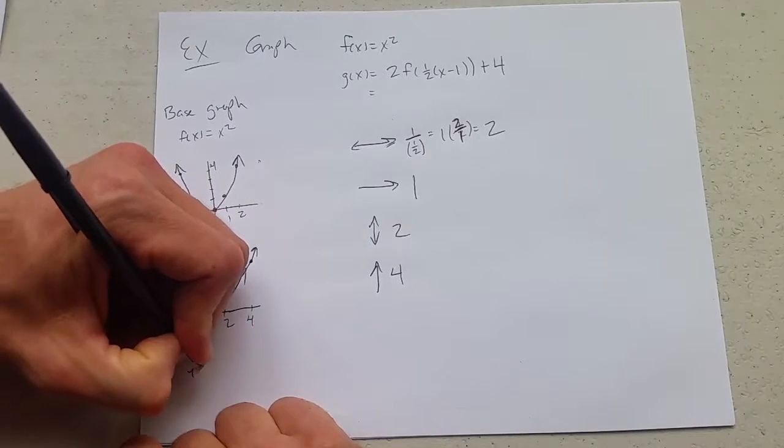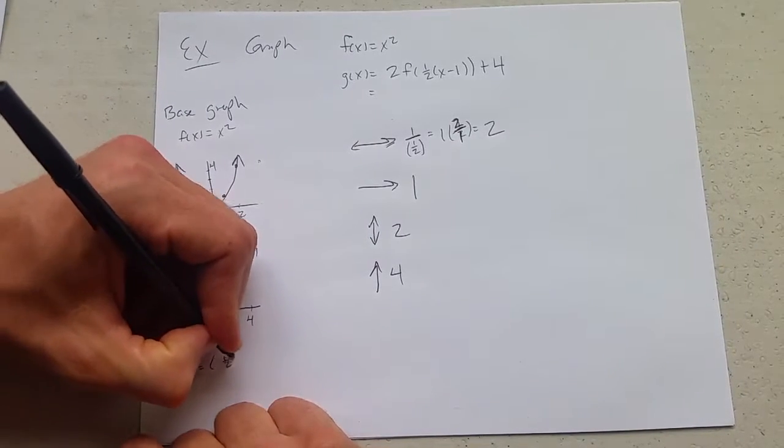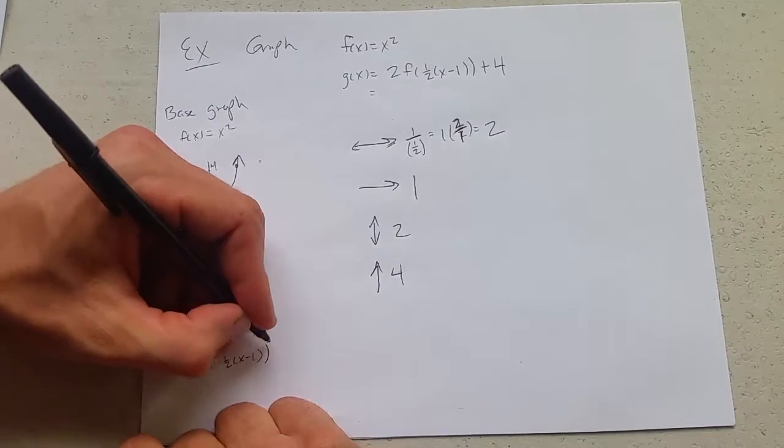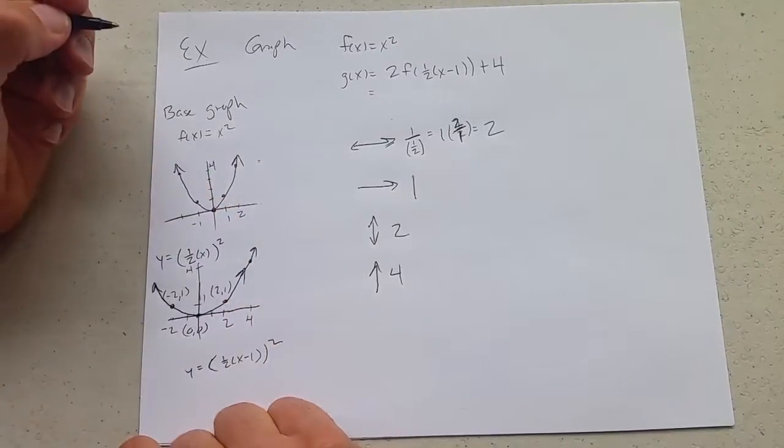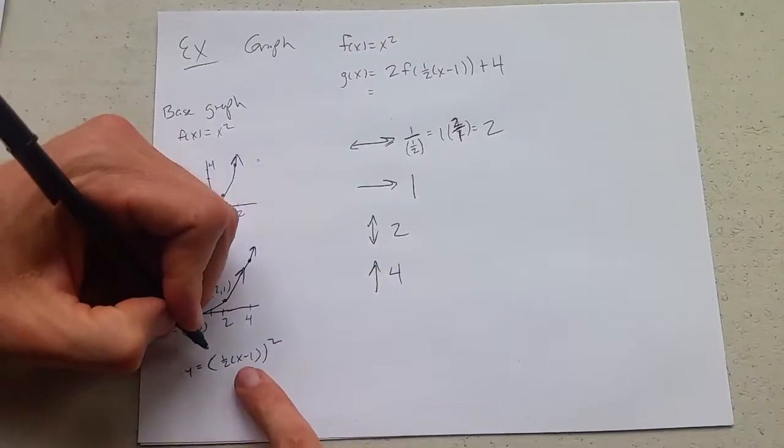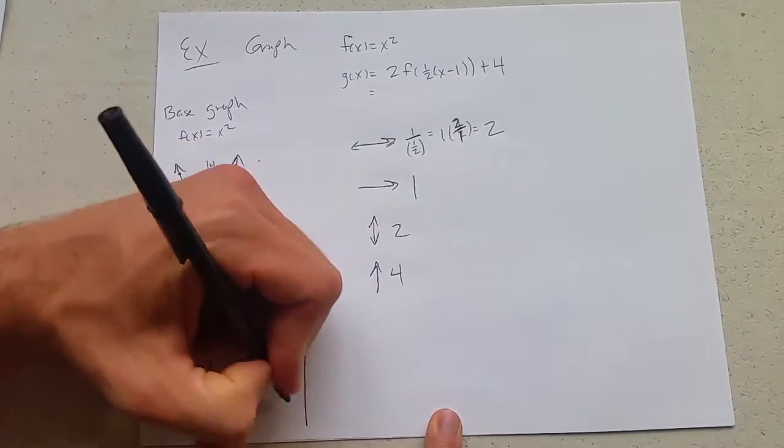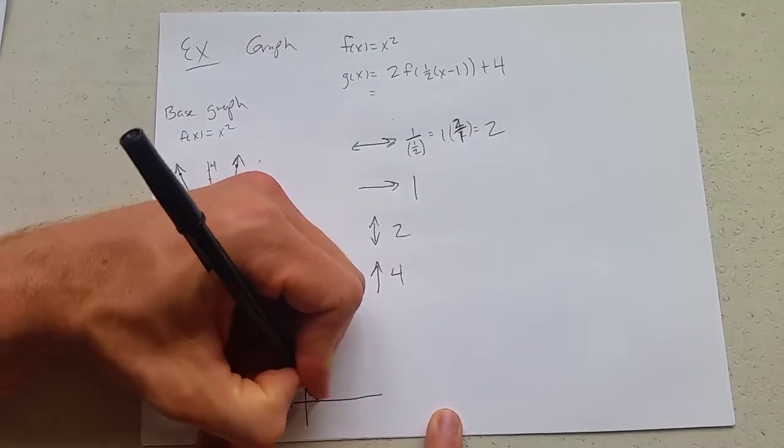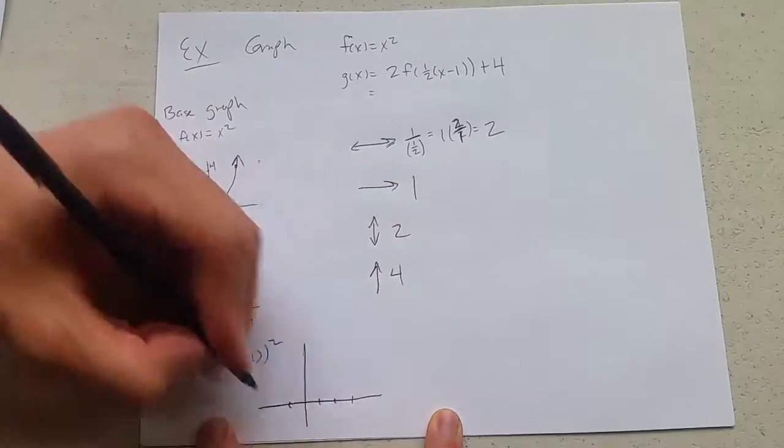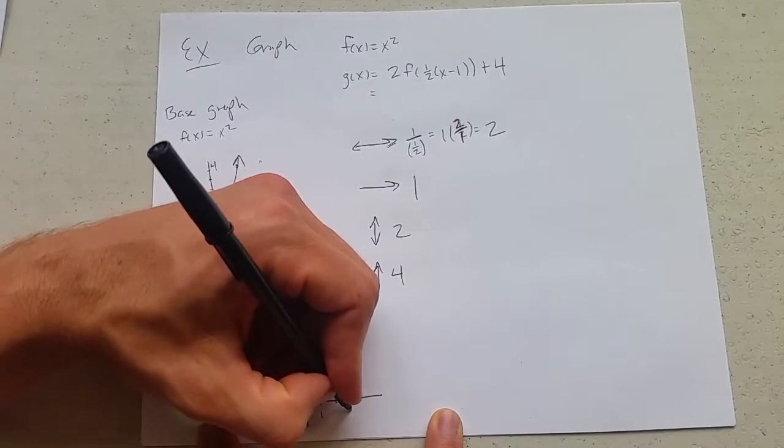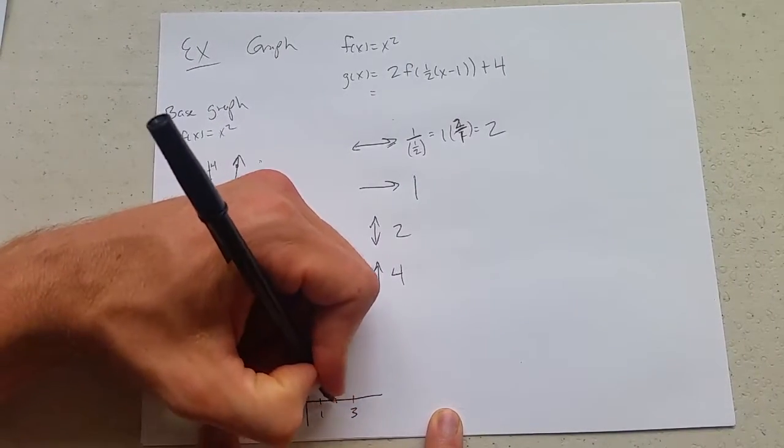Next up we're going to do the shift. So y = 1/2(x - 1)². This is a shift to the right one, so we're going to take our x coordinates and we're going to add one to each of them. So negative two goes to negative one, zero moves to one, two moves to three. These are our important x coordinates.